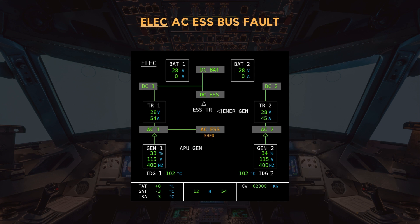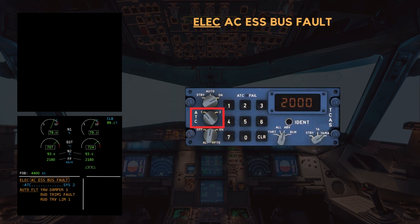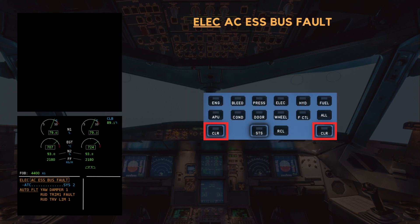Having now confirmed the AC Essential Bus Fault, the ELEC push button can be released and the rest of the eCAM actions can be completed. AC Essential Feed — Alternate. ATC System 2 is a non-monitored line, so the next step is to call: Clear ELEC.